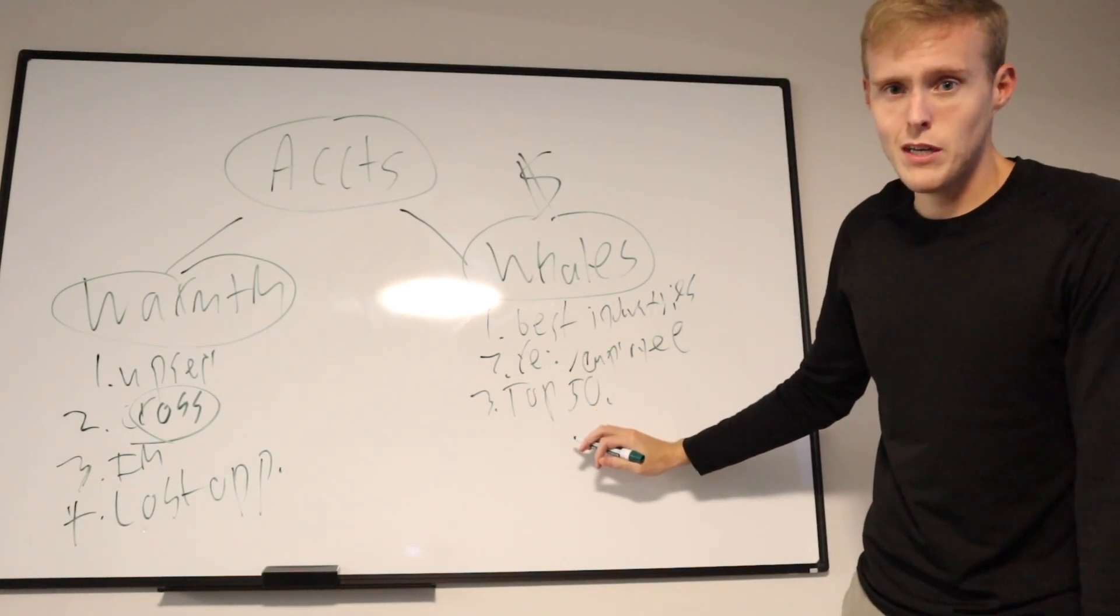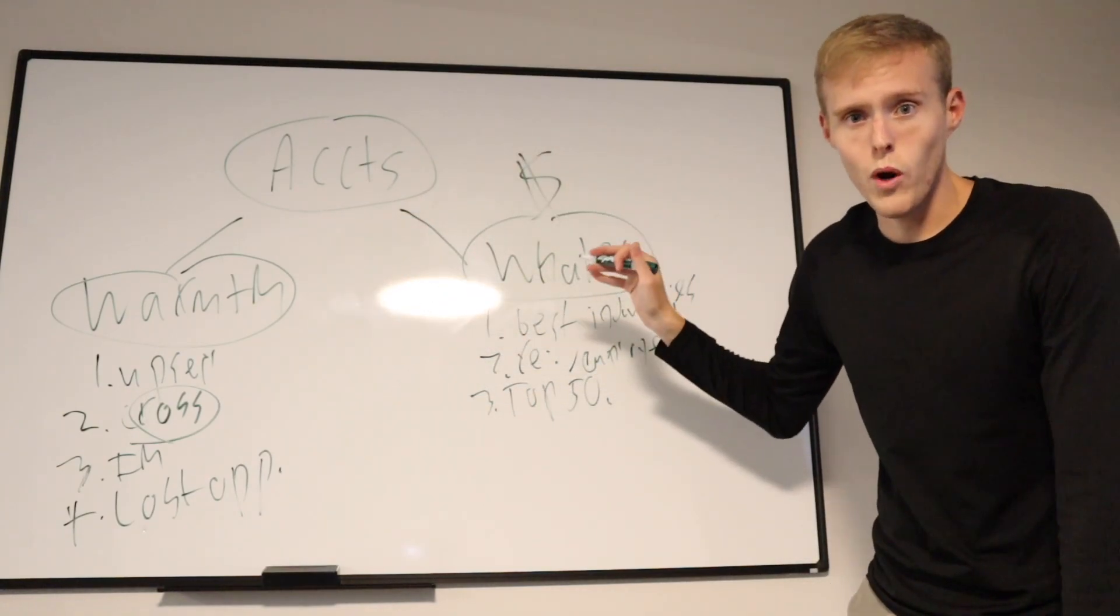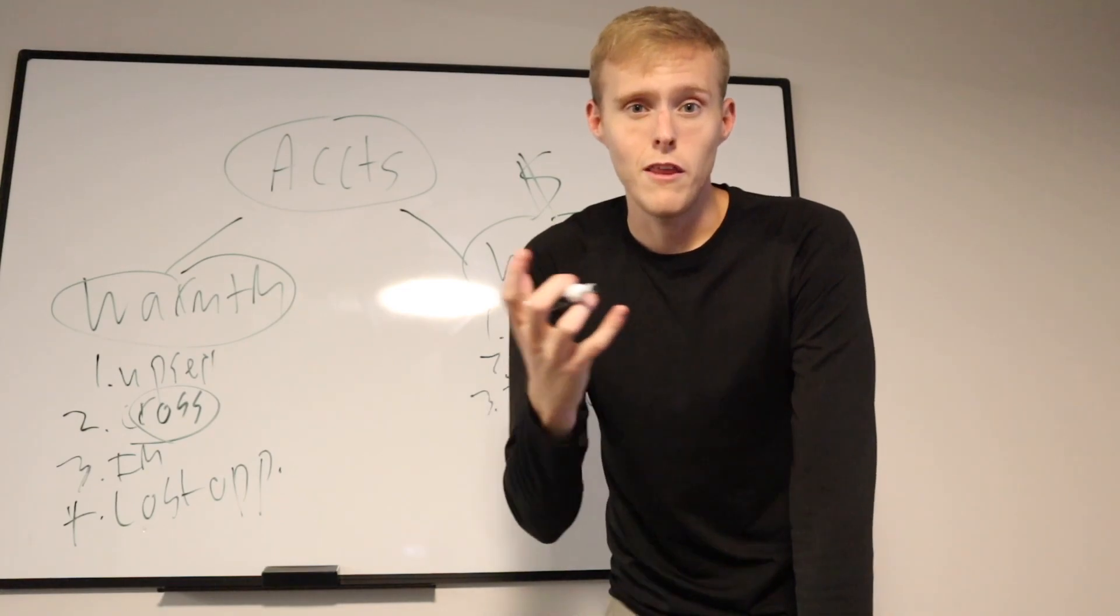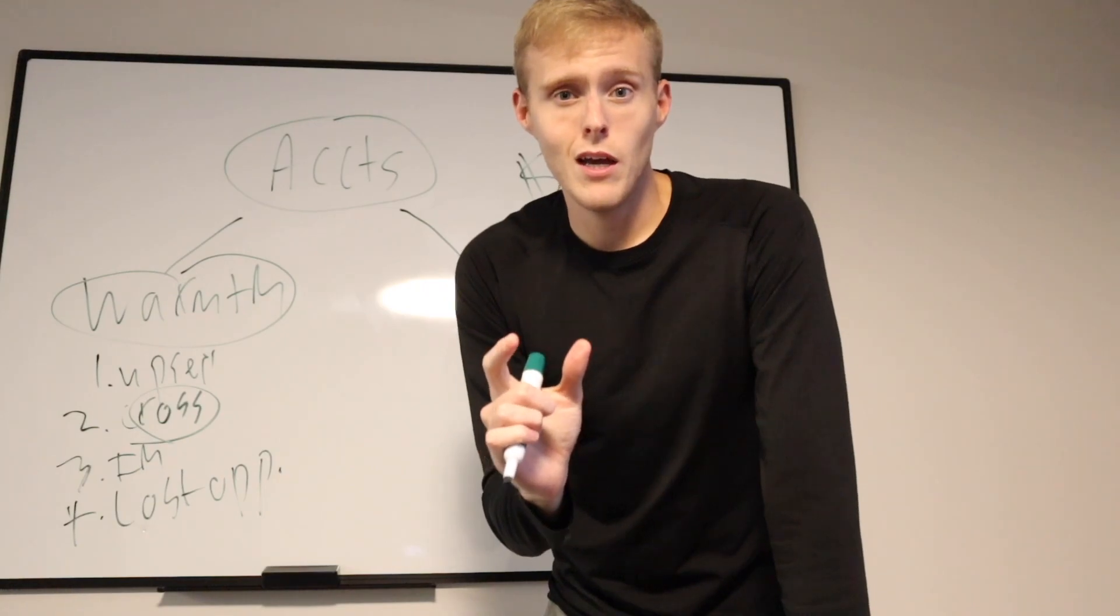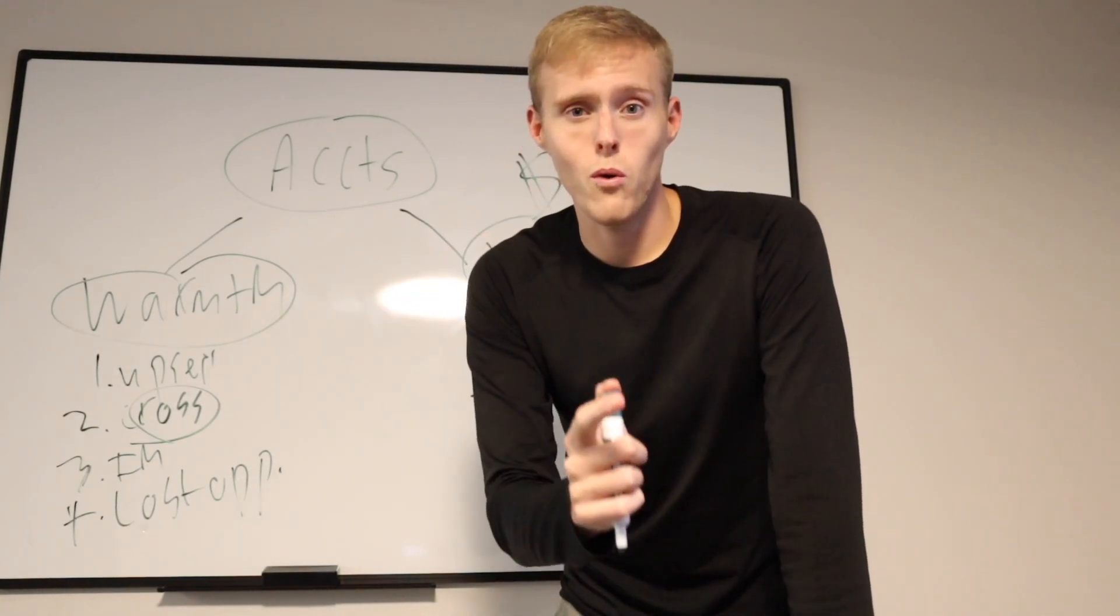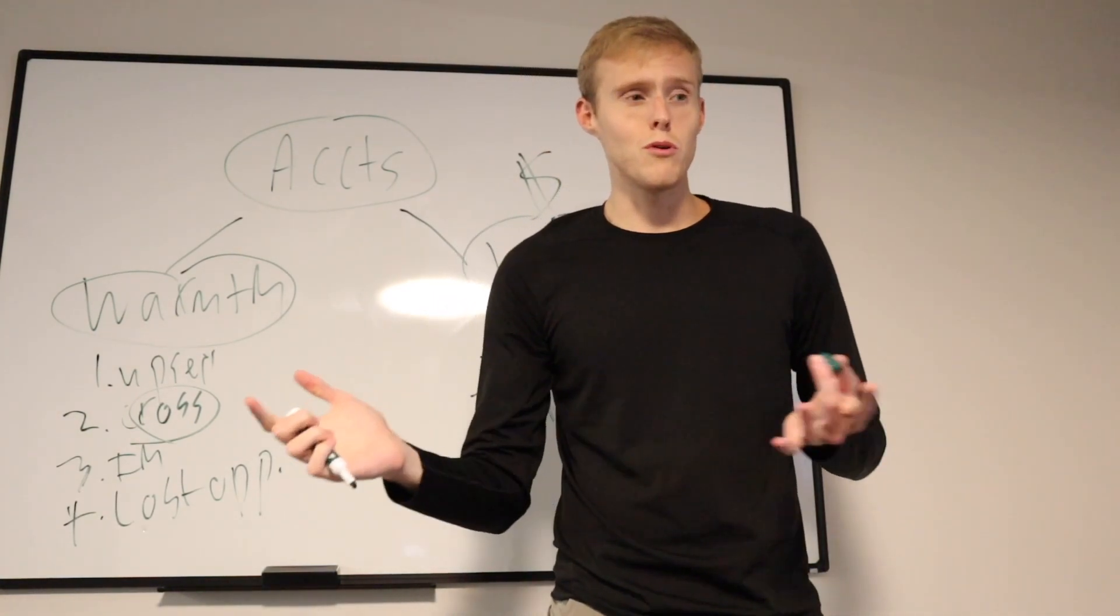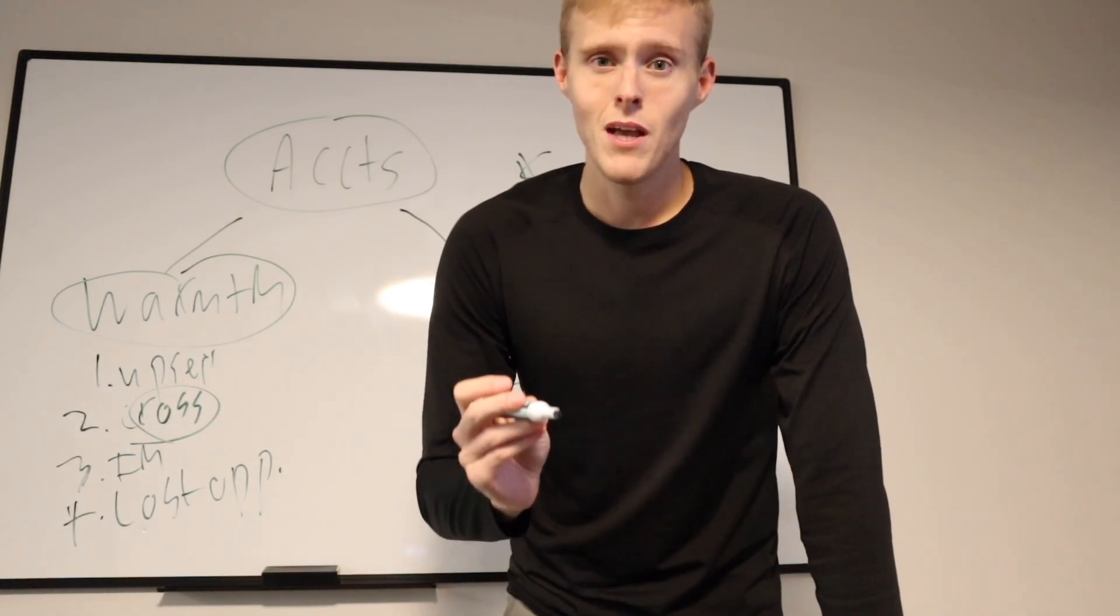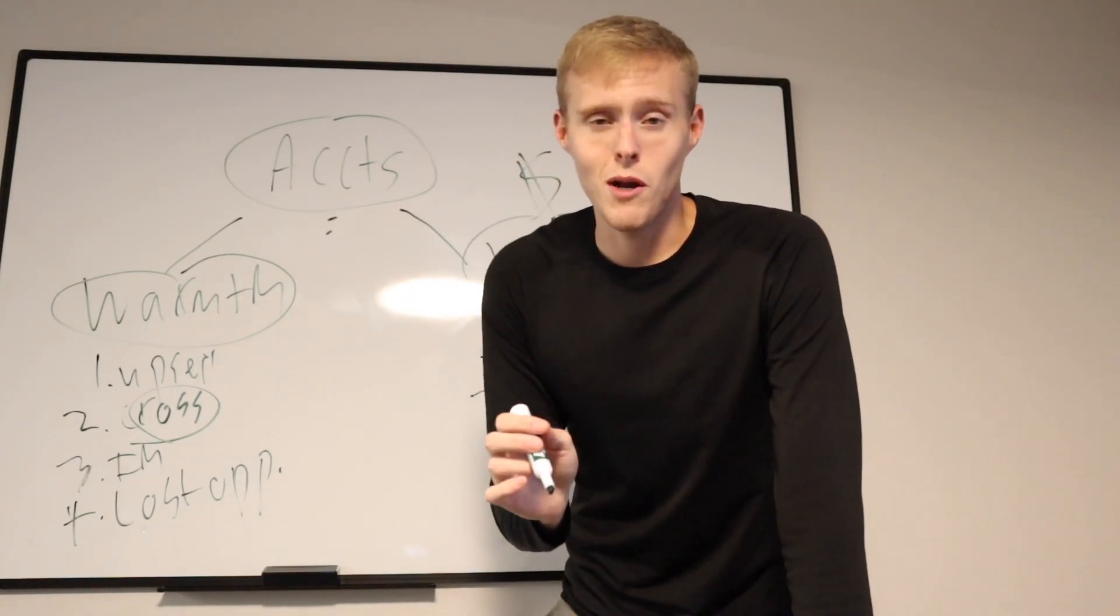Identify the top 50 accounts that have upsell potential, cross-sell potential, and also whale accounts as well. So you have a running list of 50 accounts that you are constantly prospecting into on a monthly cadence. You should know your top 50 accounts. You should know what they care about. You should know who the power players are. You should track what are the updates you hear. You're using my competitor and your contract is valid through the next three months. Let me set a reminder in two months to reach back out. The better you know your book of business, the better chance you're going to have of generating more pipeline.